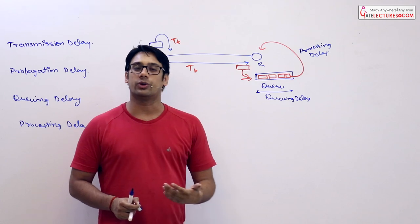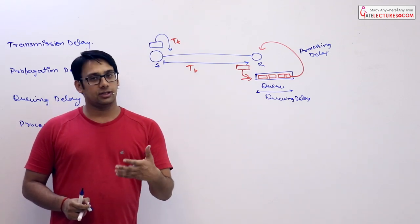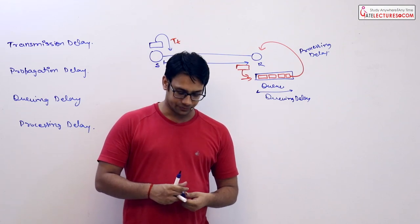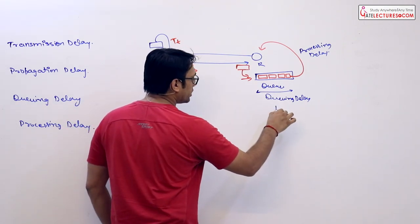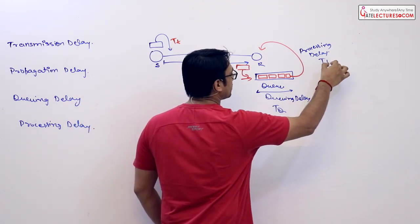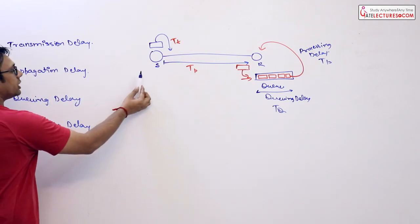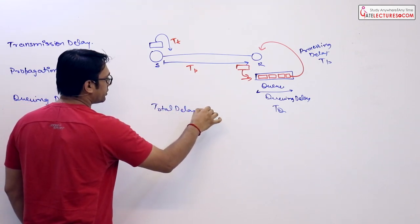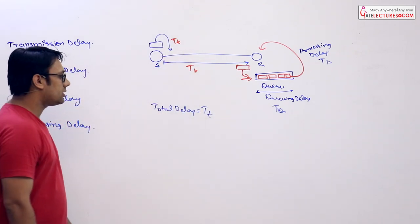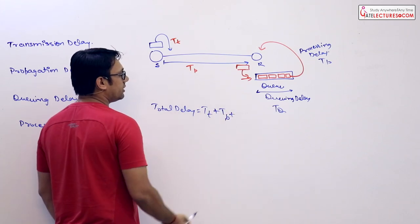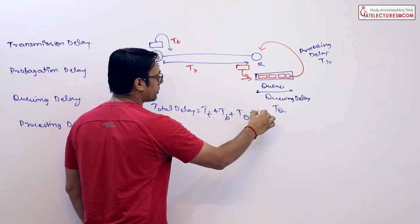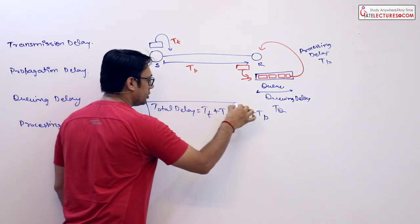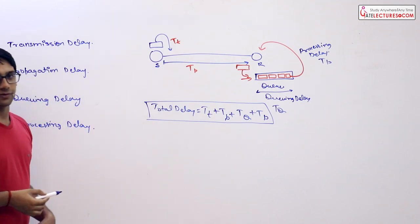There is no way to find out exactly what queuing delay or processing delay will be, but we still have to measure these values when questions provide them. We represent queuing delay as tq and processing delay as tp. The total delay for sending a data packet from sender to receiver is: total delay = transmission delay + propagation delay + queuing delay (tq) + processing delay (tp).